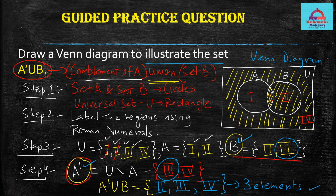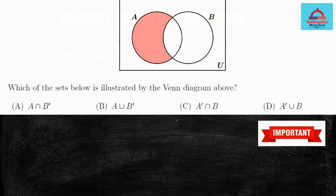As promised, here is an important question to help you for your exam. The question is: which of the following sets is illustrated by the Venn diagram? The Venn diagram is given with a shaded region — use it to reach the correct answer. There are four options: A, B, C, D. I want you to pick the right one. I'll give you a few seconds to try; feel free to pause the video to check your understanding.